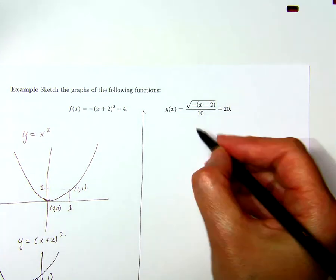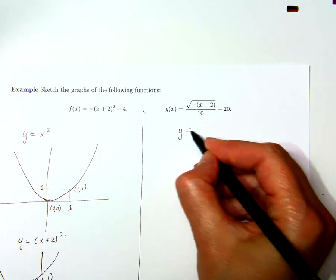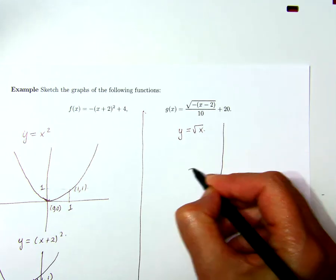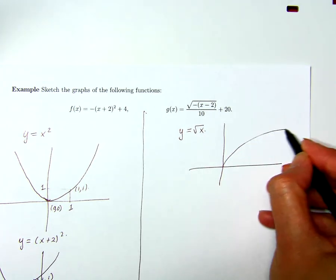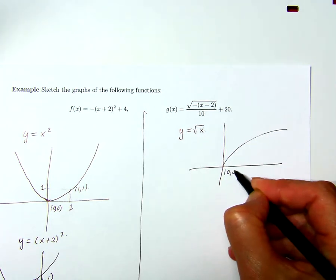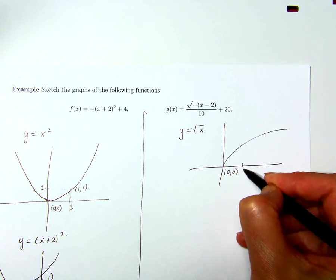Well, I'm going to start with the basic graph of y equals the square root of x here, and I'll keep track of two points zero zero and one one.